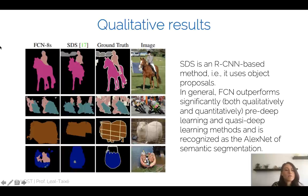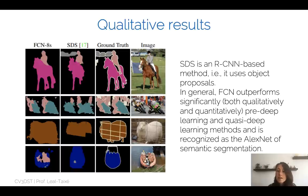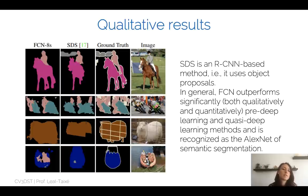FCN significantly outperforms SDS, an R-CNN-based method using object proposals, and especially outperforms pre-deep-learning methods. FCN can be considered the baseline method for semantic segmentation, analogous to how AlexNet was the baseline for image classification — a foundational architecture from which many subsequent works drew inspiration.